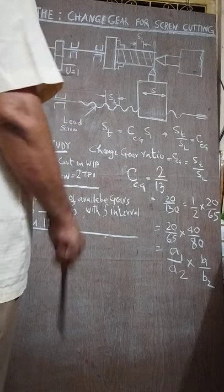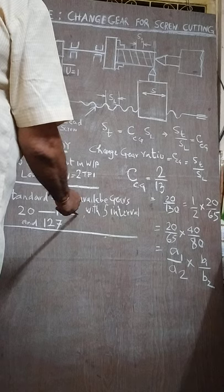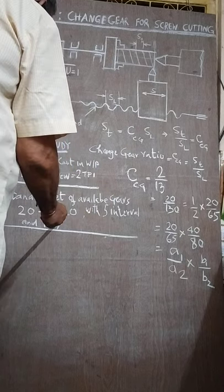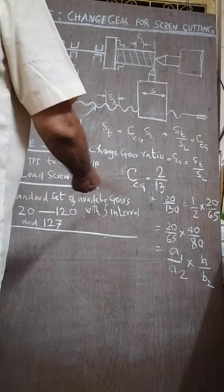It is available in the market. Normally 20 to 120 range with 5 teeth intervals are available, with a 127 gear because that is the conversion.